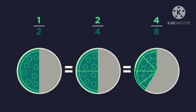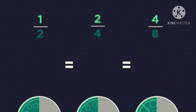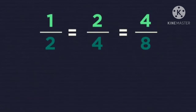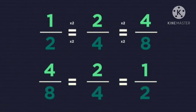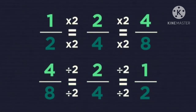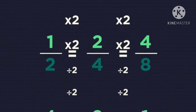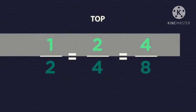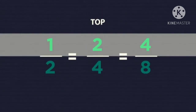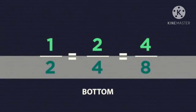Visually it could be represented like this. How are they the same, you ask? Well, once you multiply or divide the top and the bottom parts of the fraction by the same number, the value stays the same. Remember, whatever you do to the top part of the fraction, you must do to the bottom.